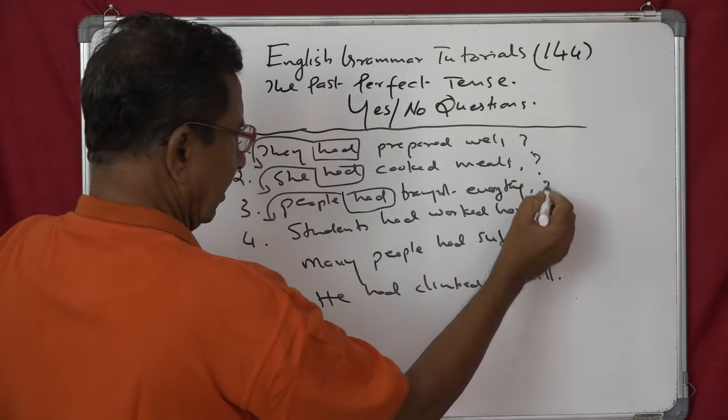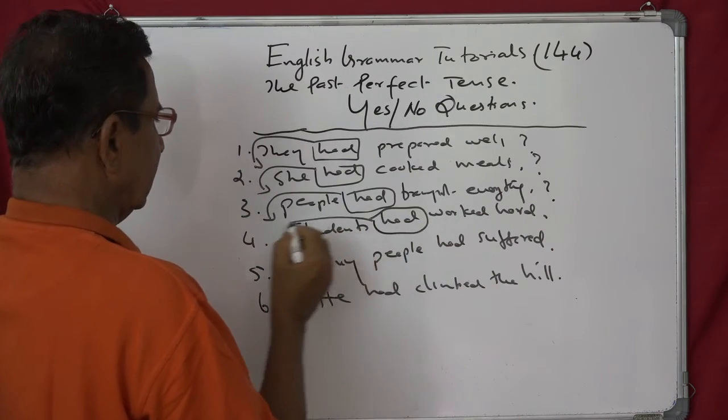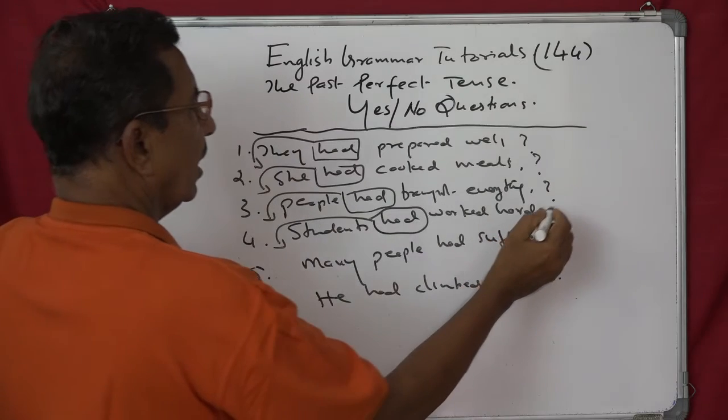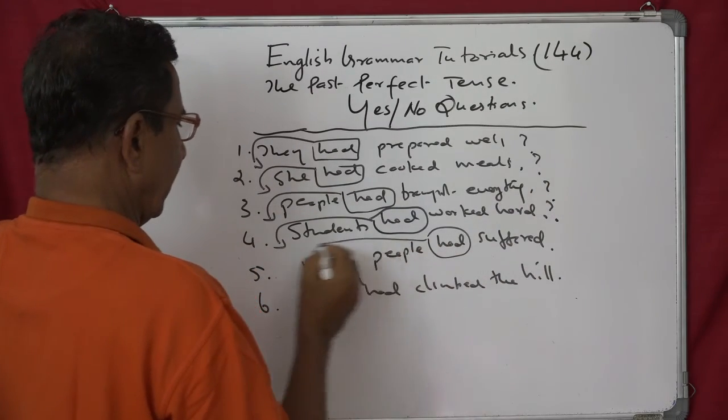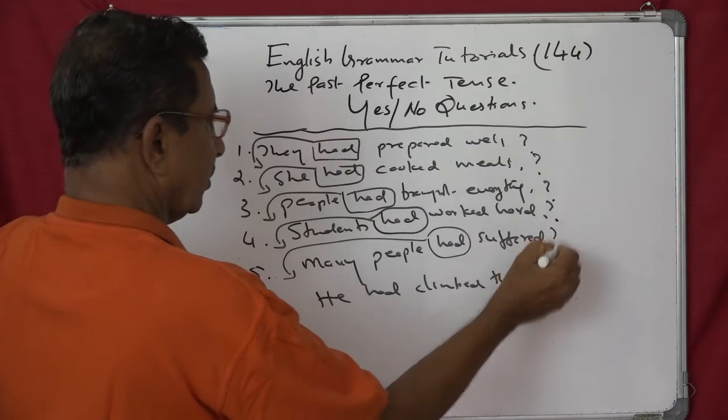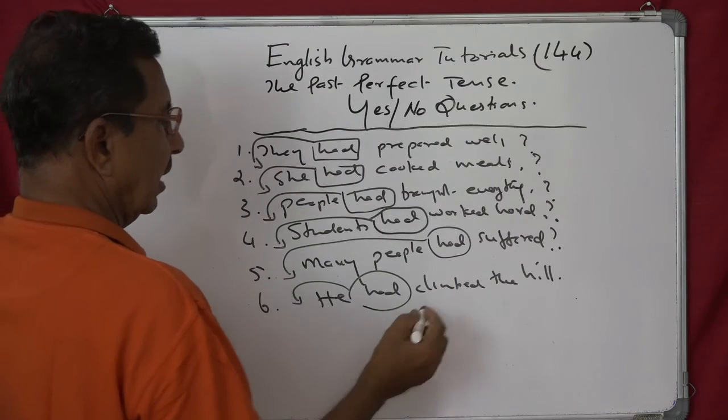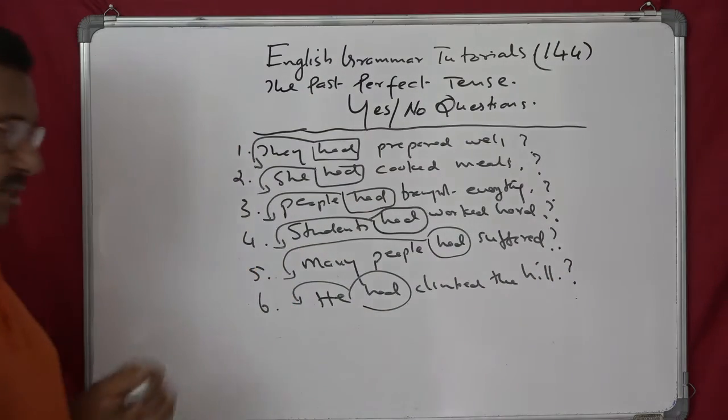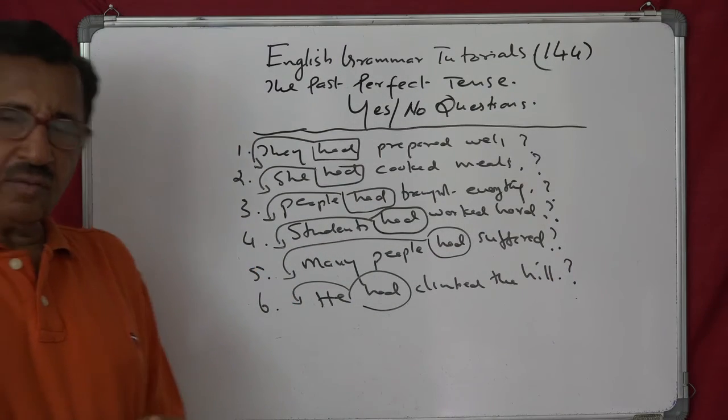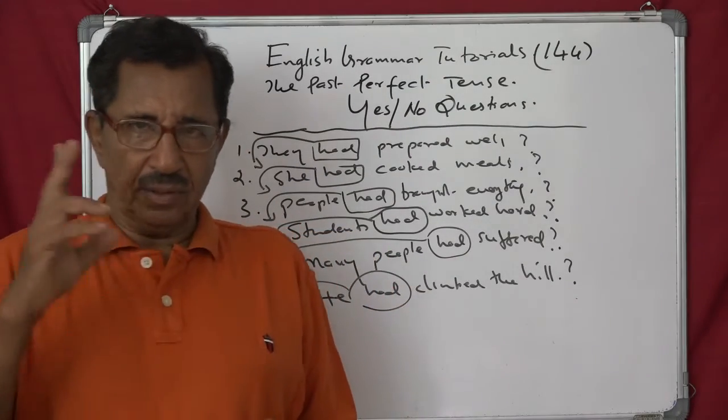everything? Had students worked hard? Had many people suffered? Had he climbed the hill? That's all. So when you have got more than two parts